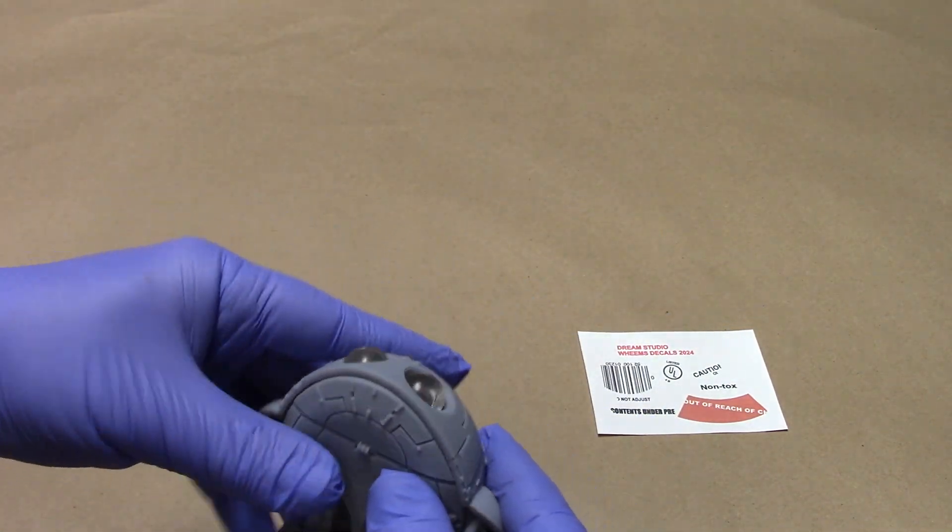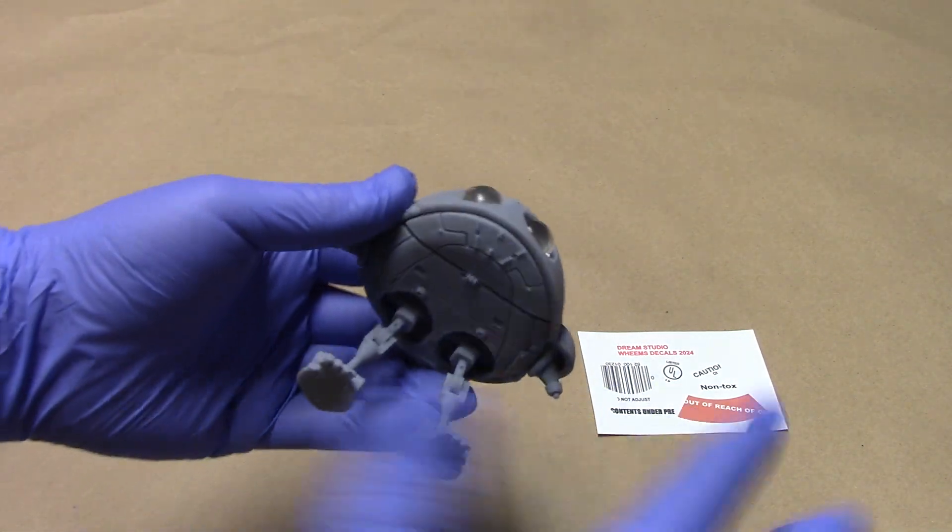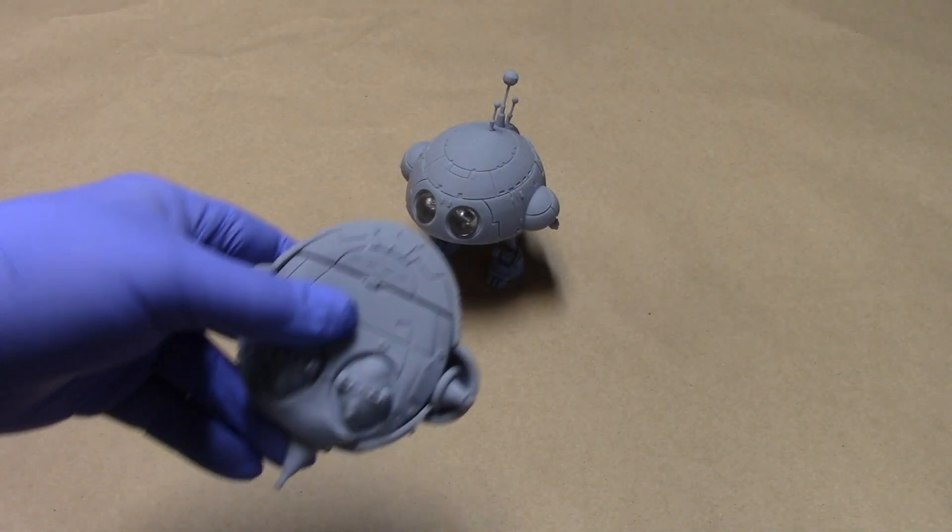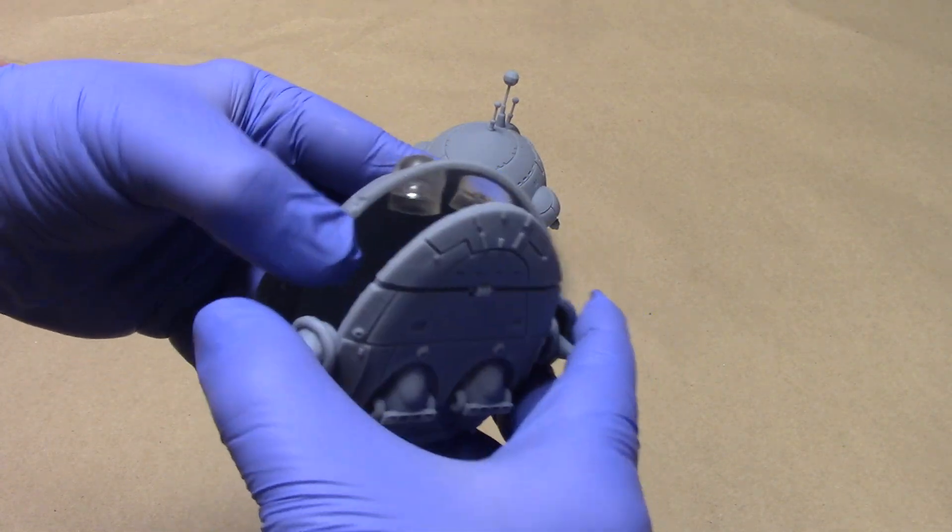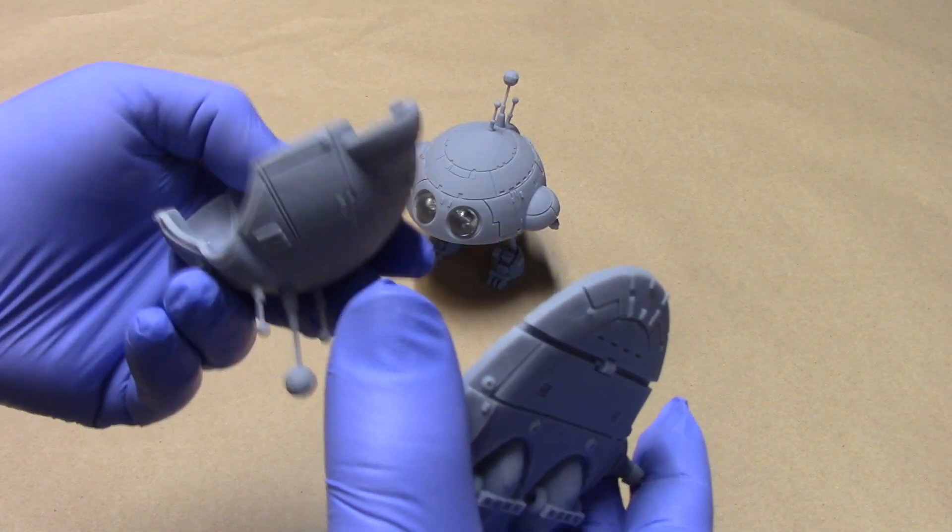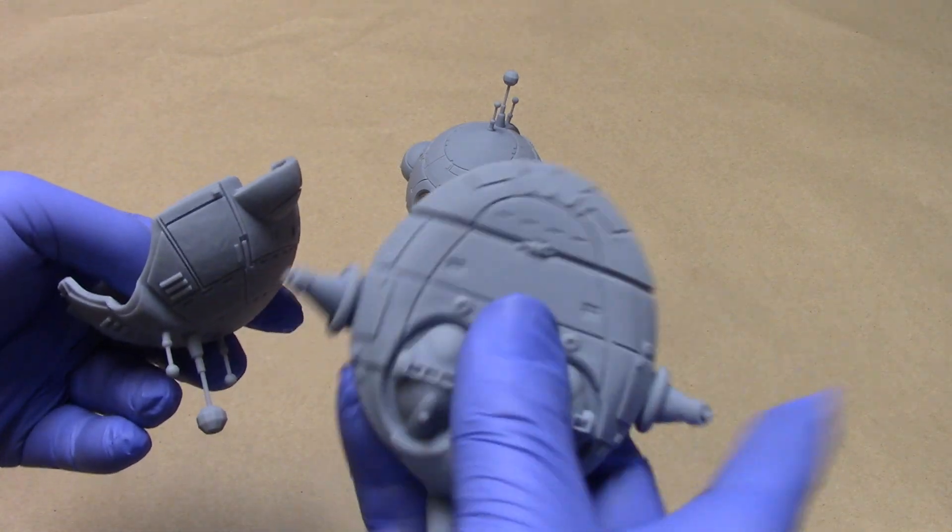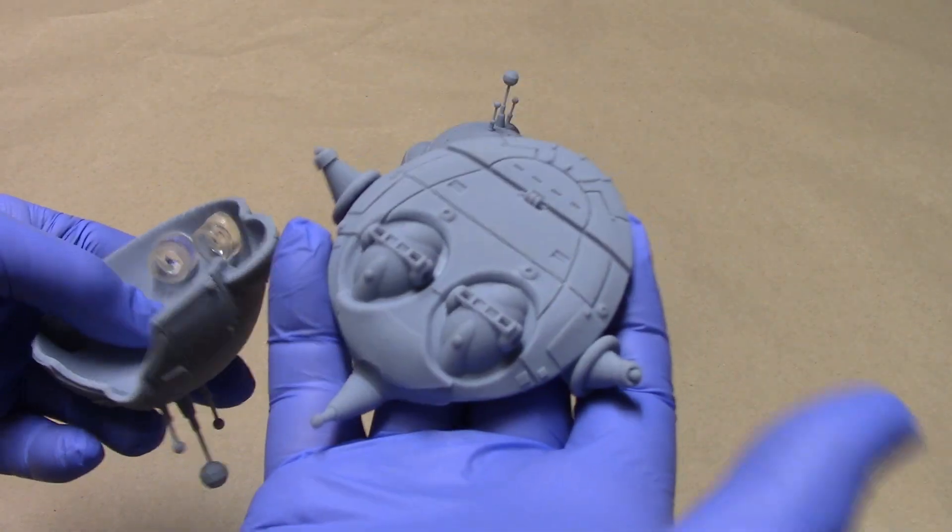I went through probably about seven or eight test prints just to make sure everything works well. I also wanted to show real quick that there's an alternate bottom. If you buy the digital files for Weems, there's this alternate bottom.